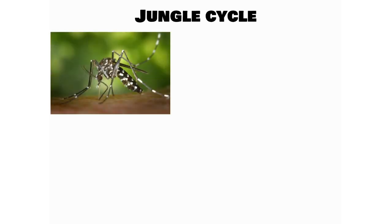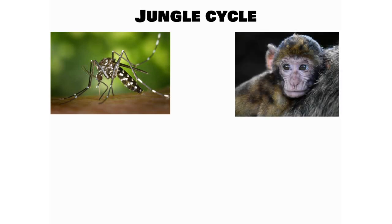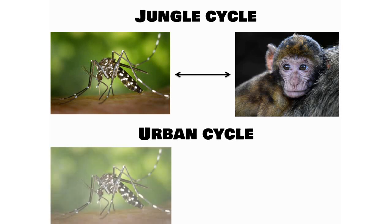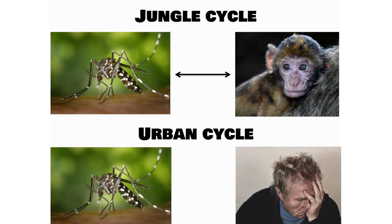There are two life cycles of yellow fever virus. The one which occurs in the jungle is called the jungle cycle or sylvatic cycle. The infection is transmitted from an infected Aedes aegypti mosquito to monkeys and this keeps going — this is called the jungle cycle. The urban cycle is the one which occurs in cities, where an infected mosquito transmits the infection to healthy humans and the cycle keeps going.